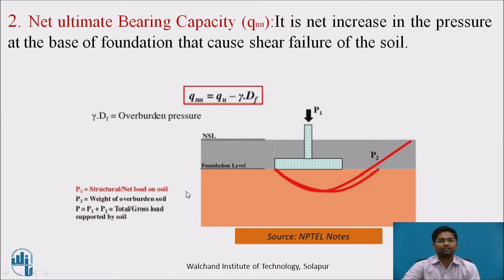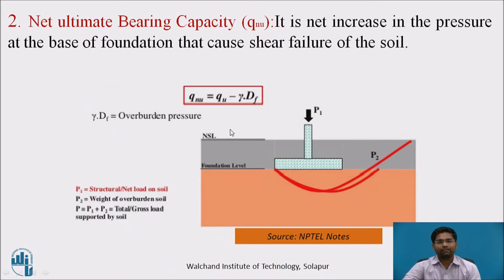The second definition: net ultimate bearing capacity. Net ultimate bearing capacity is nothing but the increasing pressure at the base of the foundation that causes shear failure of soil — the shear failure beneath the foundation. Therefore, QNU equal to QU minus gamma into DF, where gamma is nothing but the unit weight of soil sample, and DF is nothing but the depth of footing.